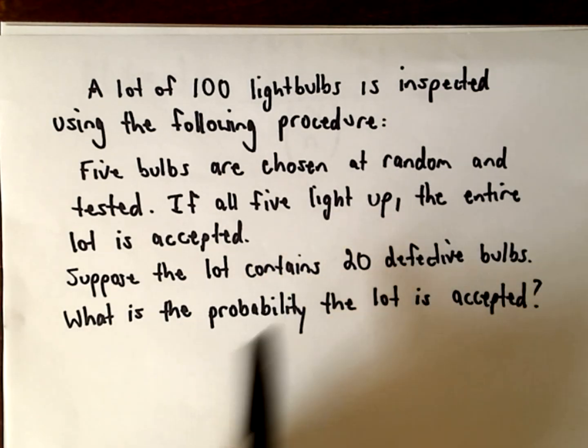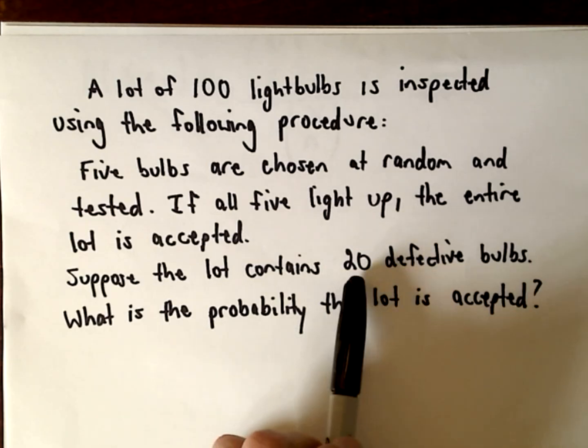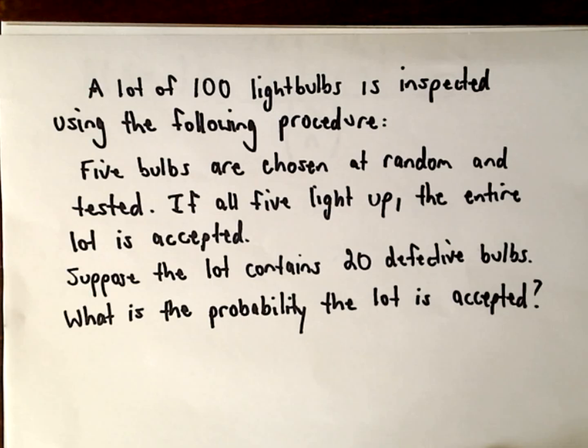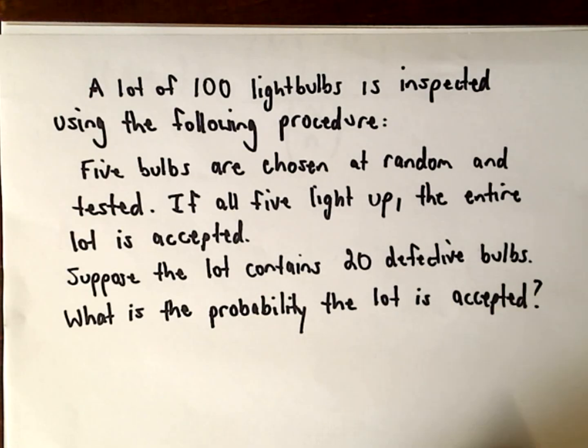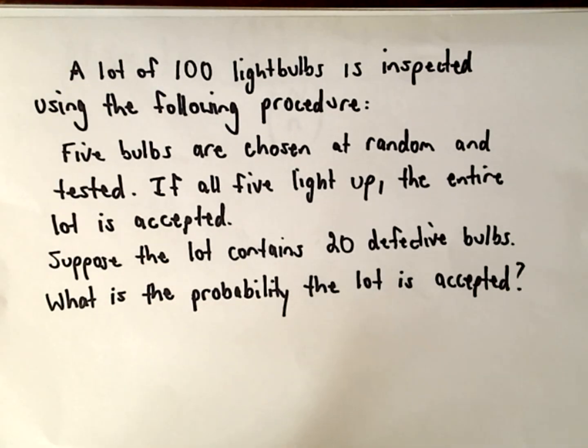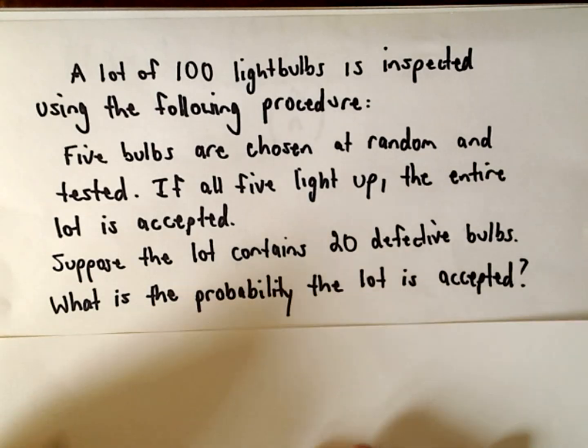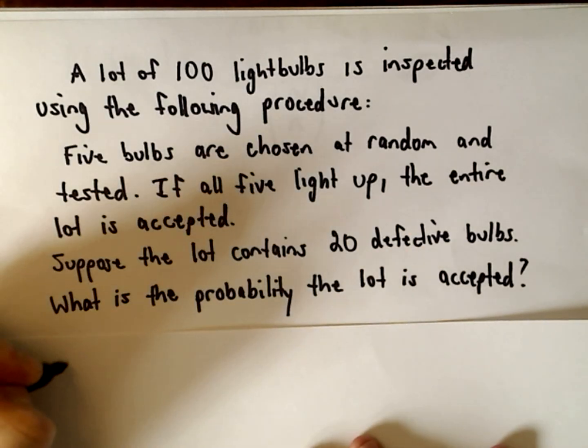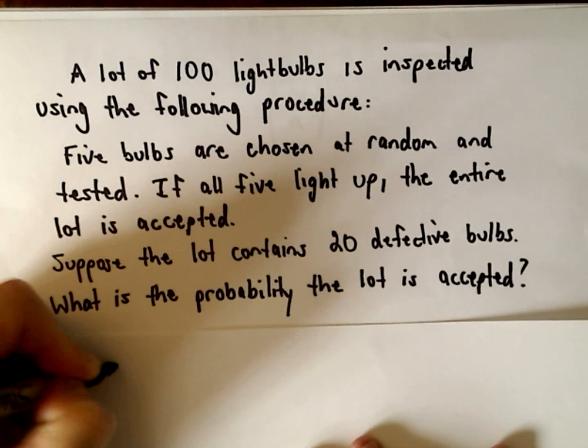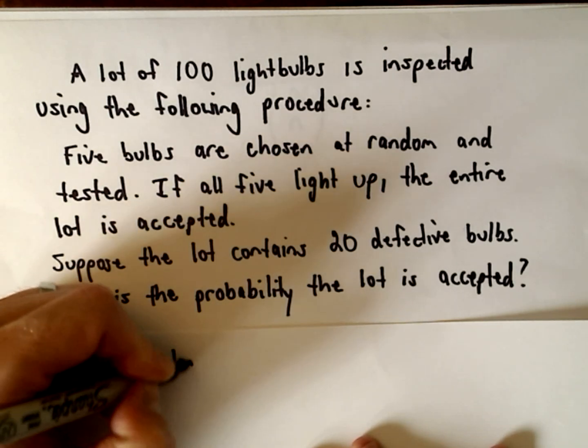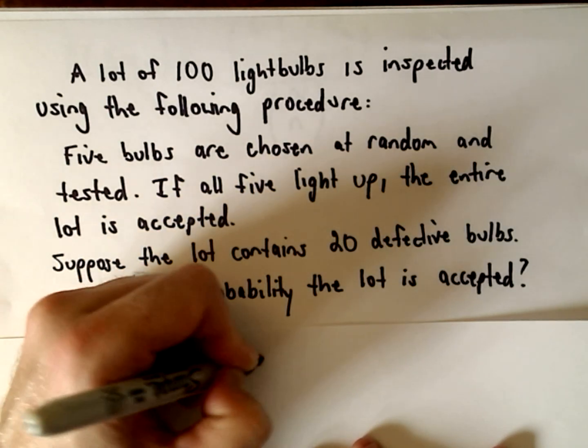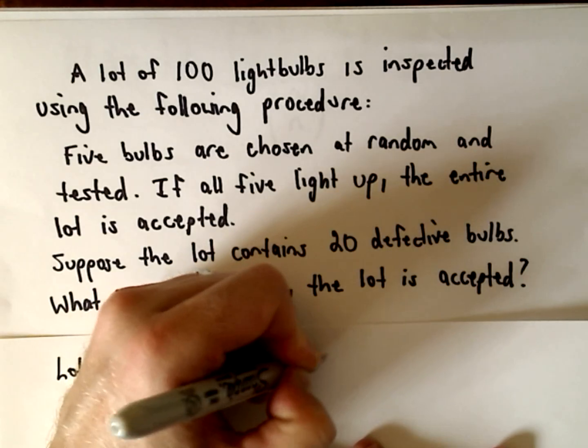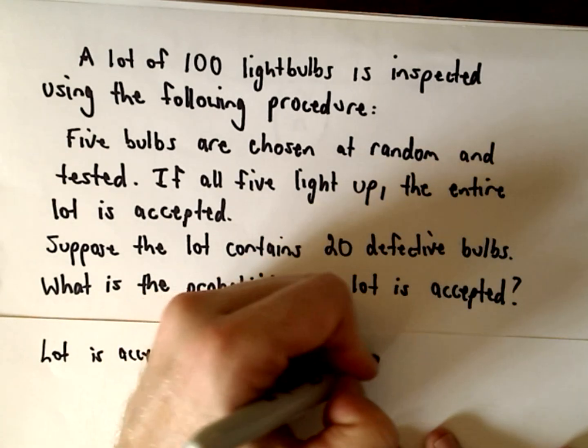Let's suppose though that we know somehow that the lot contains 20 defective bulbs. So what's the probability that the lot is accepted? We want to figure out the probability that the lot is accepted. Well what's going to happen if the lot is accepted? If we choose...